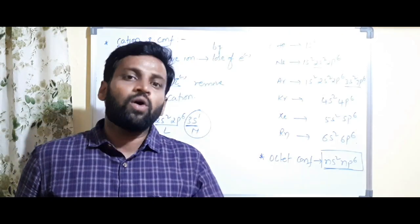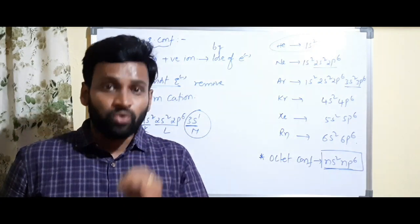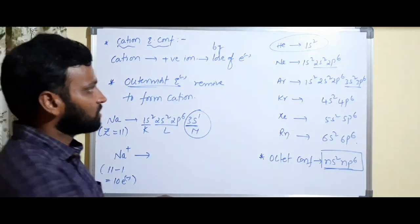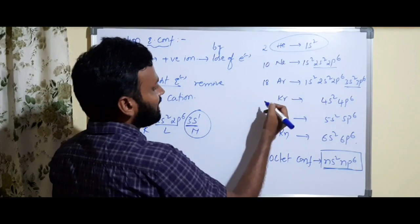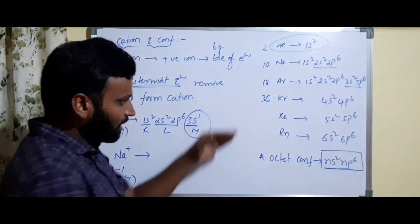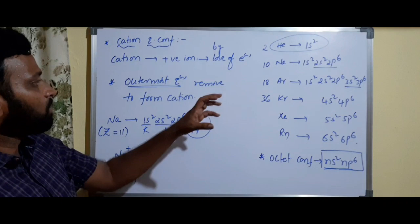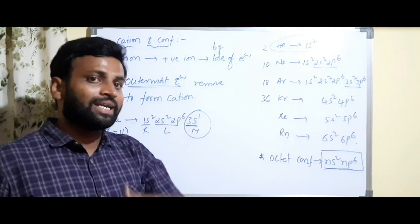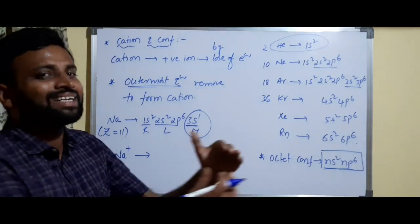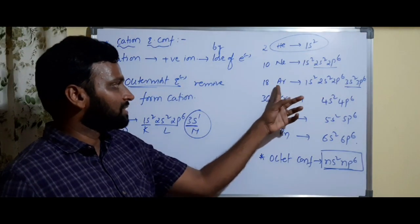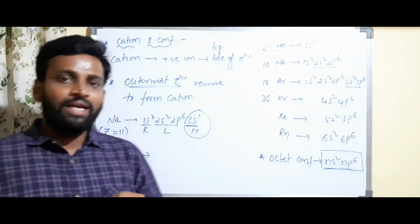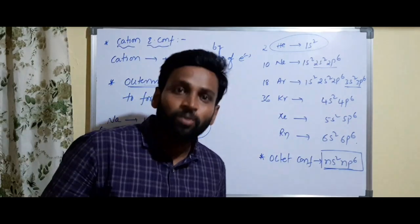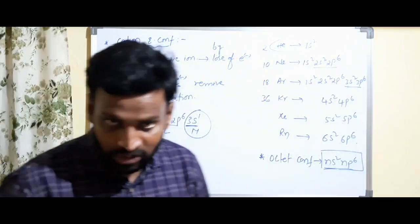Every atom will try to lose or gain electrons to get the nearest noble gas configuration. For sodium, the nearest noble gas is neon (atomic number 10). The 17th element will try to get configuration like element 18; magnesium (Z=12) will try to be like neon; sulfur (Z=16) will try to get stability like argon. Every atom tries to attain the nearest noble gas configuration by losing or gaining electrons.